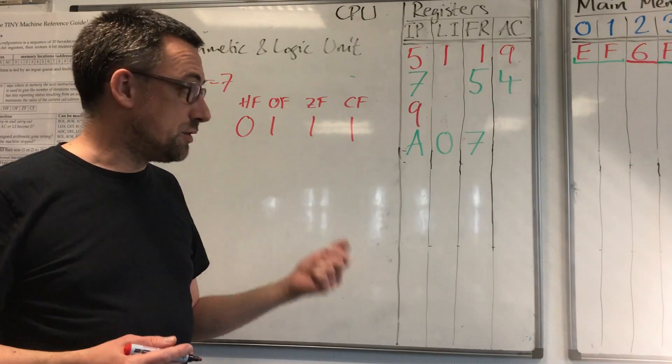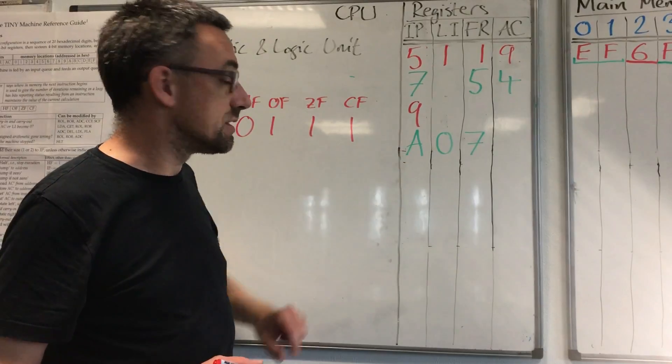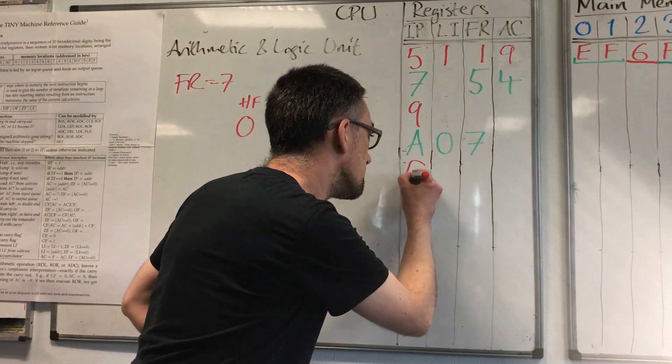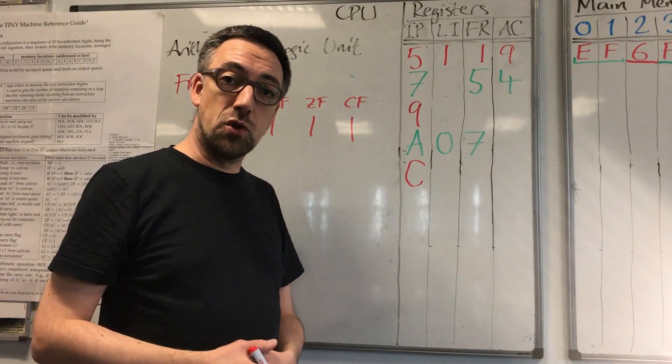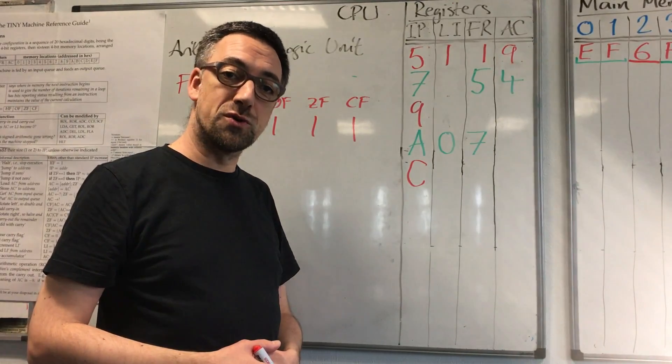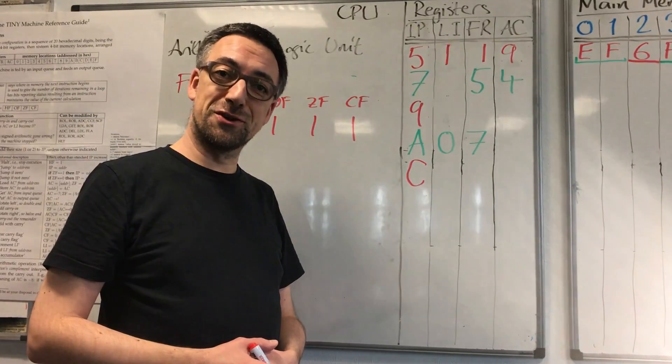Correspondingly, we as usual add the size of the instruction to the instruction pointer, and the instruction pointer moves on to C. That's to say, we've reached the end of the loop—we're not jumping back to the beginning of the loop, we're carrying on with the code after the loop. That's the end of the cycle. Let's go around again.